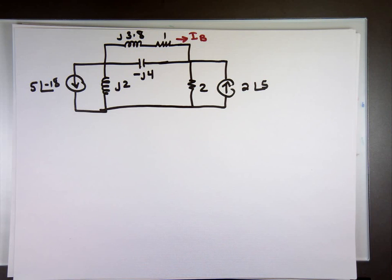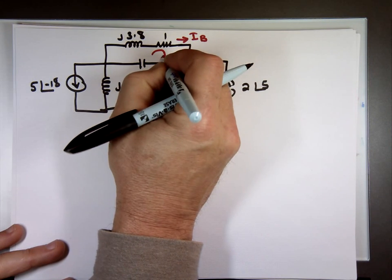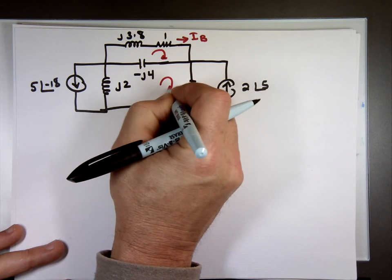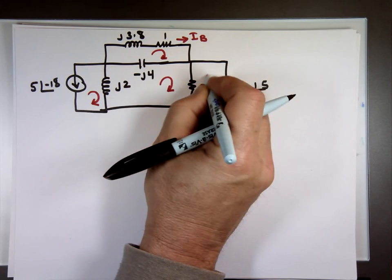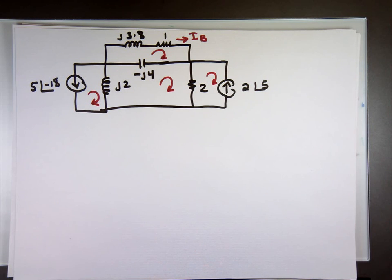Well, I've got four loops here. I've got this one, I've got this one, I've got this one, I've got that one. That's four equations by four unknowns. Or maybe not.